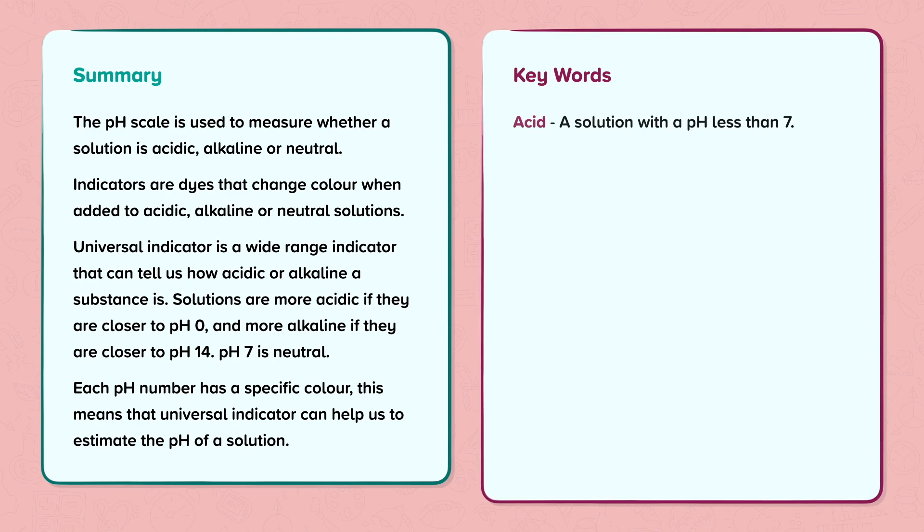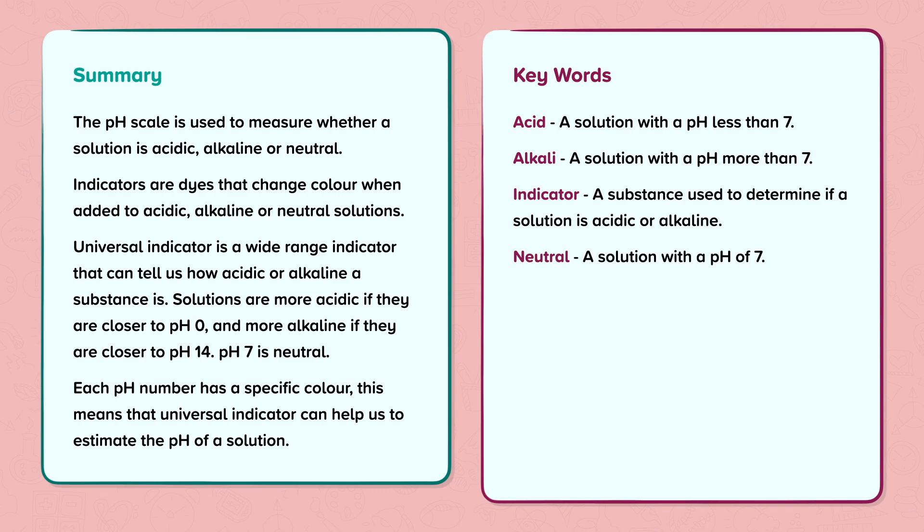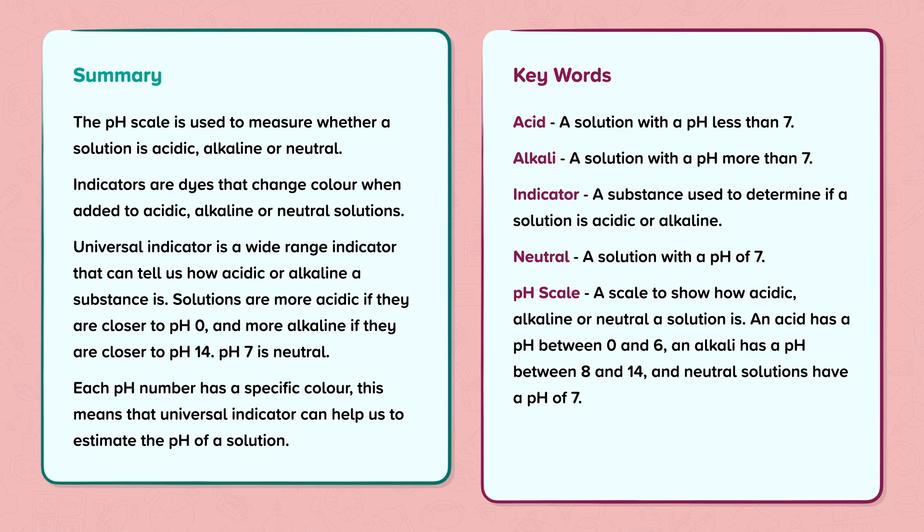Keywords: Acid - A solution with a pH less than 7. Alkali - A solution with a pH more than 7. Indicator - A substance used to determine if a solution is acidic or alkaline. Neutral - A solution with a pH of 7. pH scale - A scale to show how acidic, alkaline or neutral a solution is. An acid has a pH between 0 and 6. An alkali has a pH between 8 and 14. Neutral solutions have a pH of 7. Universal indicator - A type of indicator that can tell how acidic or alkaline a solution is.